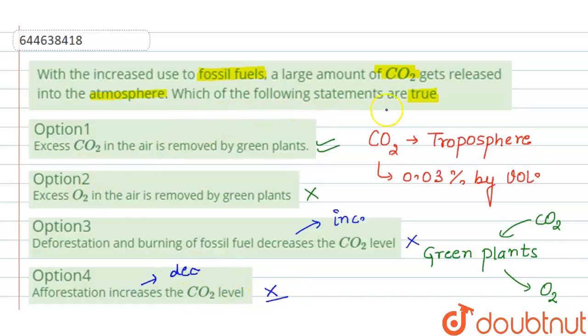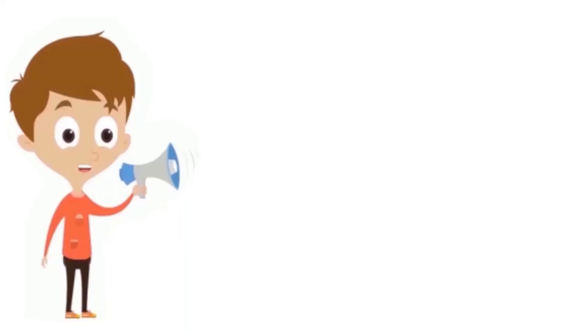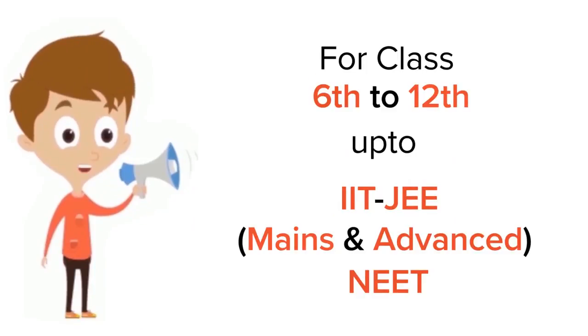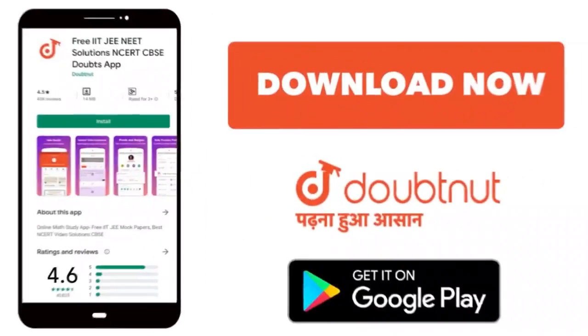Now we have to tell which of the following statements are true. So the correct option will be option one. For class six to twelfth, IIT-JEE and NEET level, trusted by more than five crore students. Download Doubtnut app today.